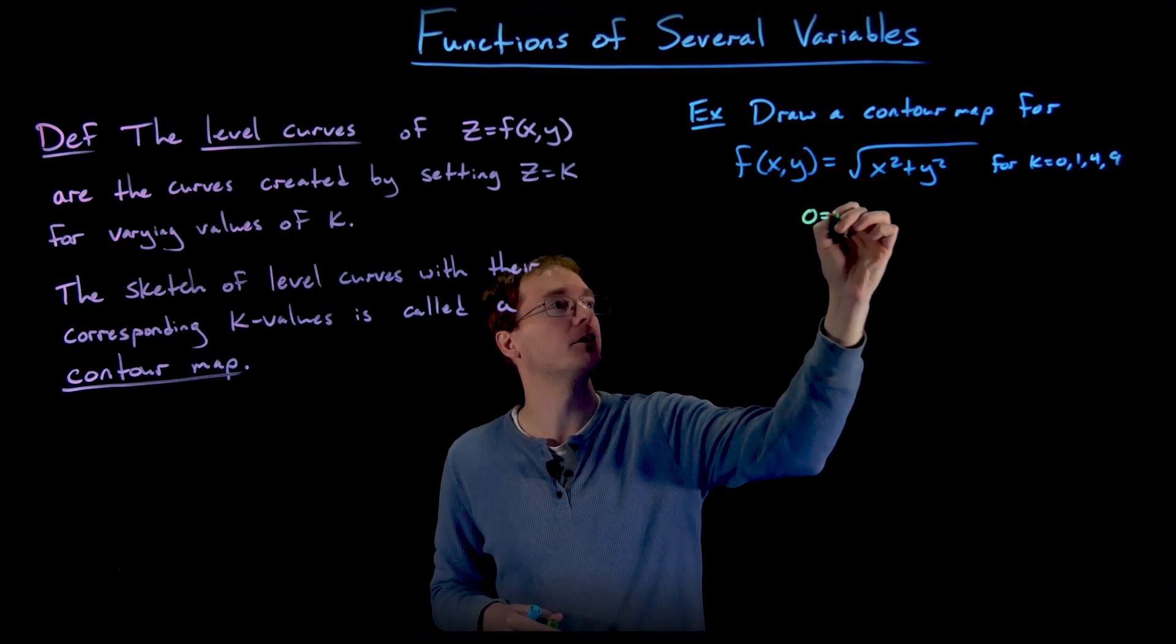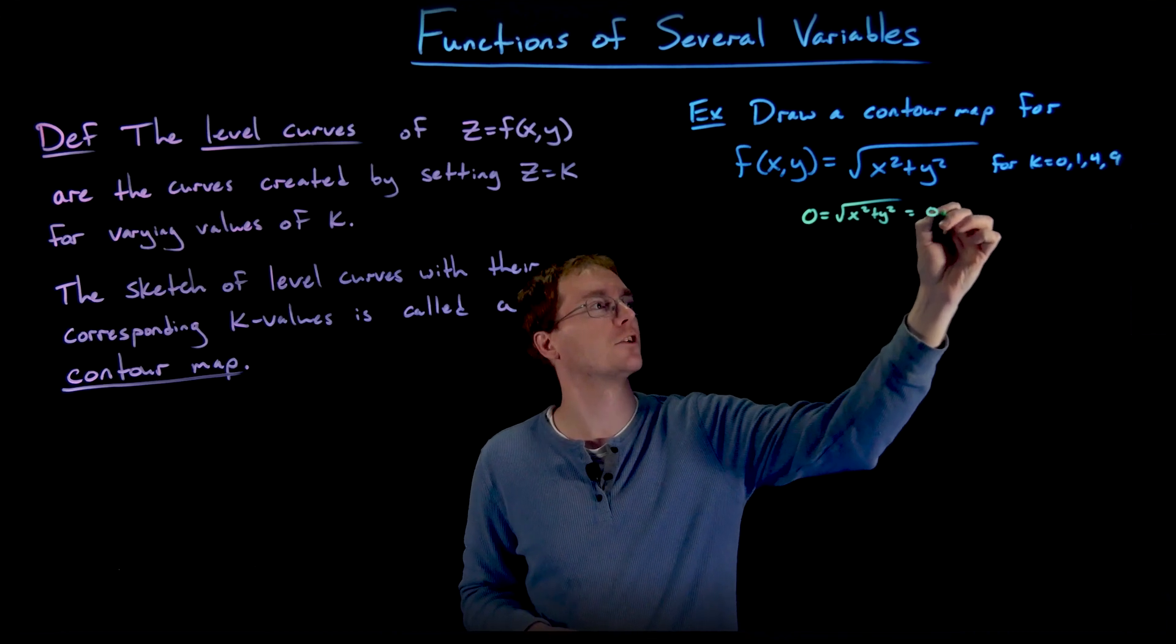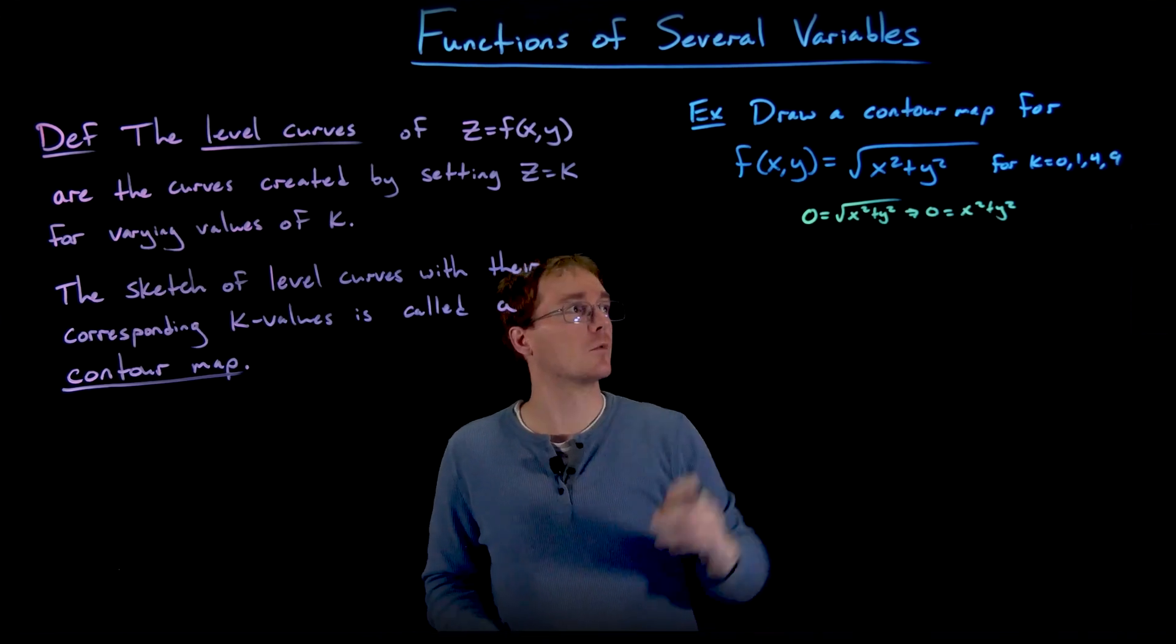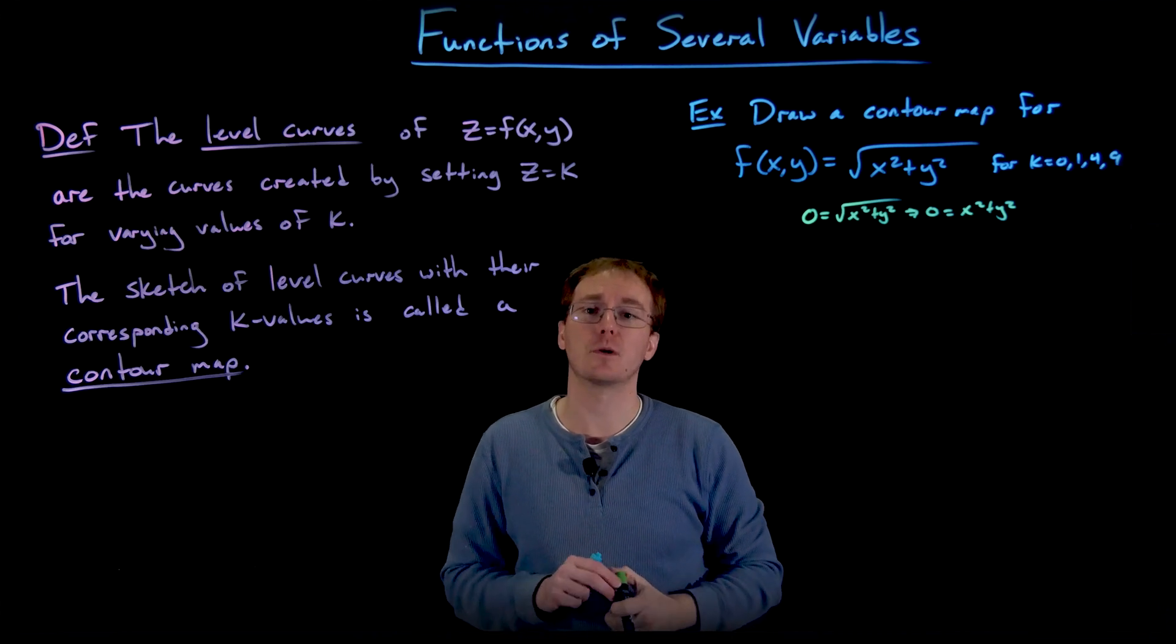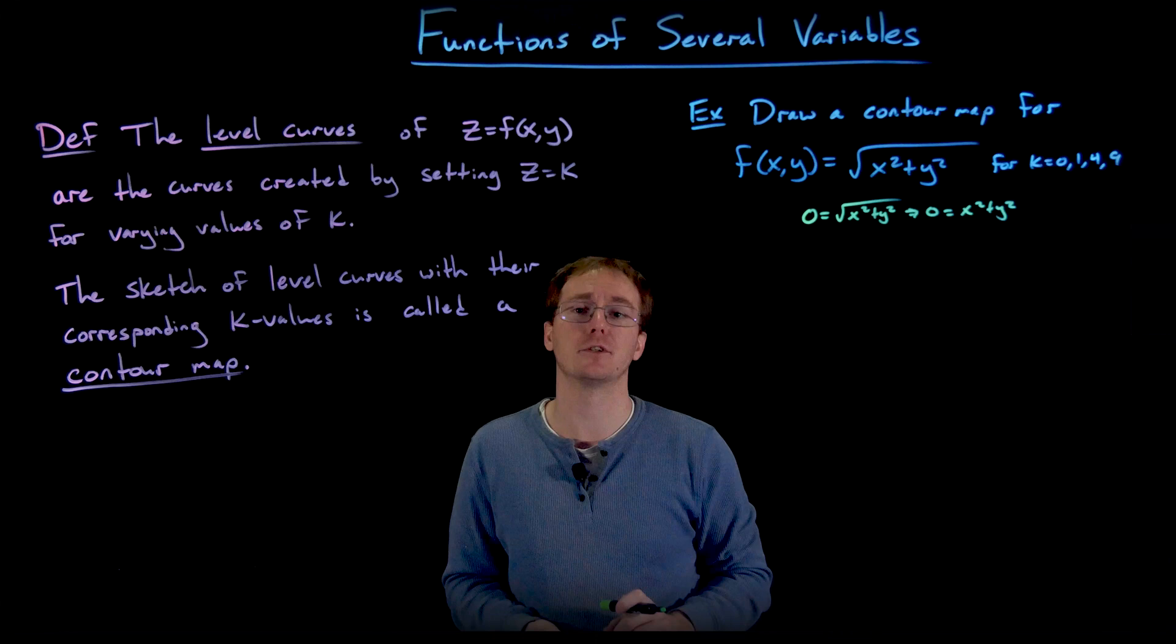Well, that'll give us the equation 0 = √(x² + y²) or 0 = x² + y². But what is the graph of 0 = x² + y²? Well, it's actually going to be the single point at the origin (0, 0).